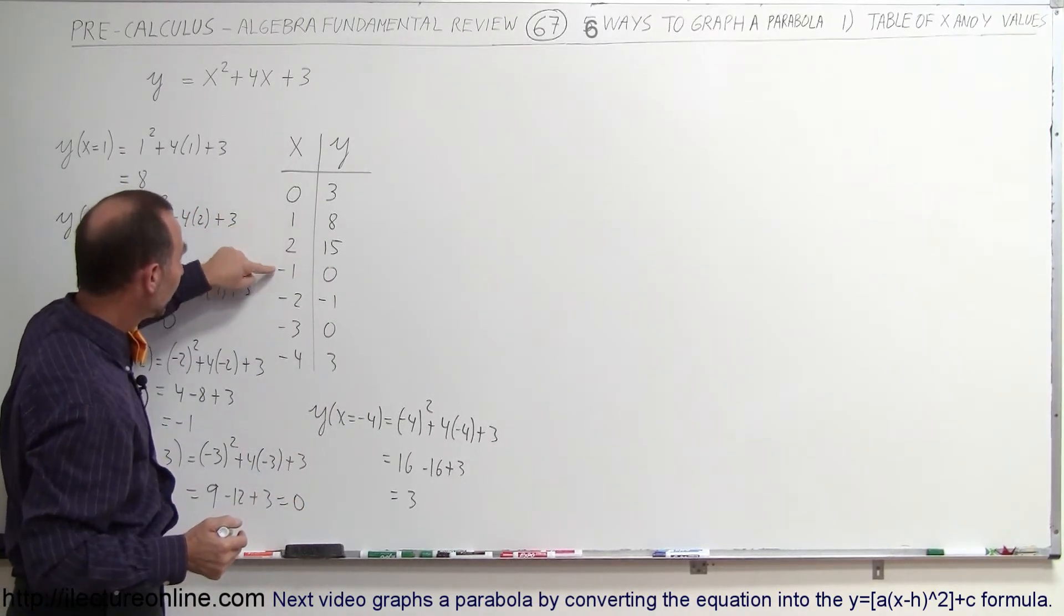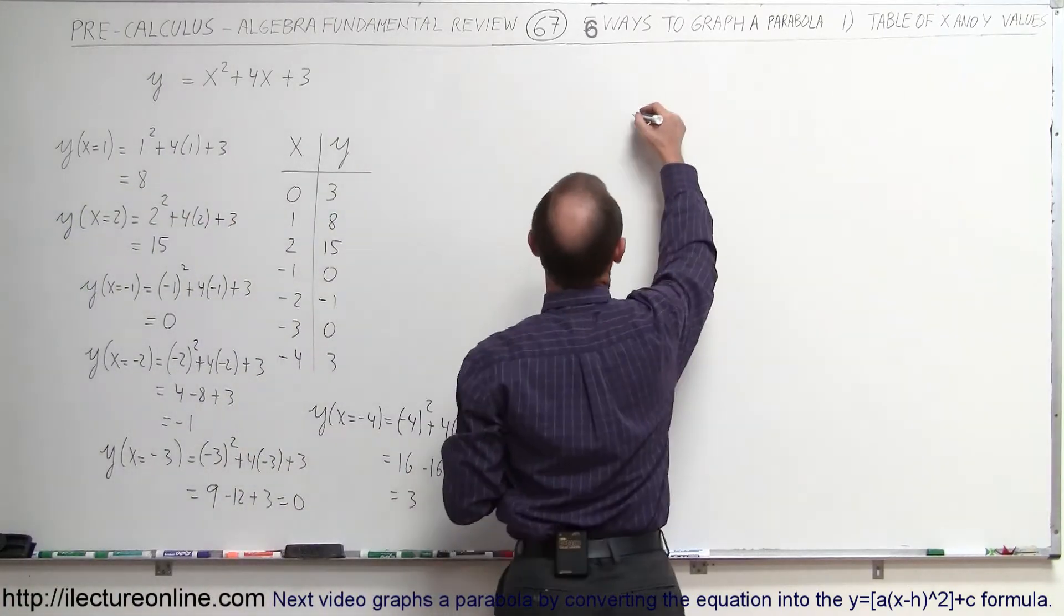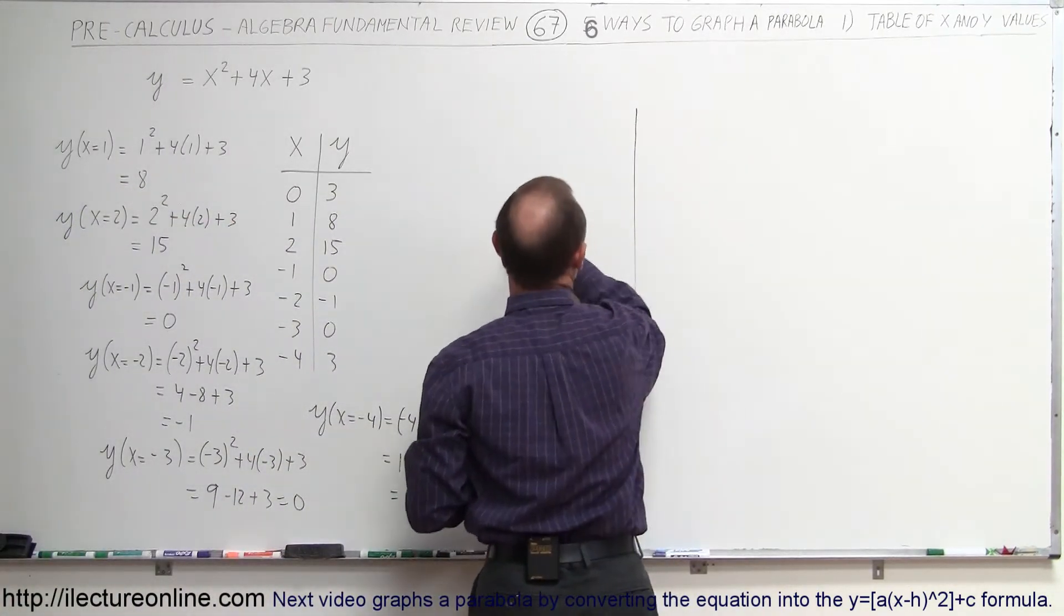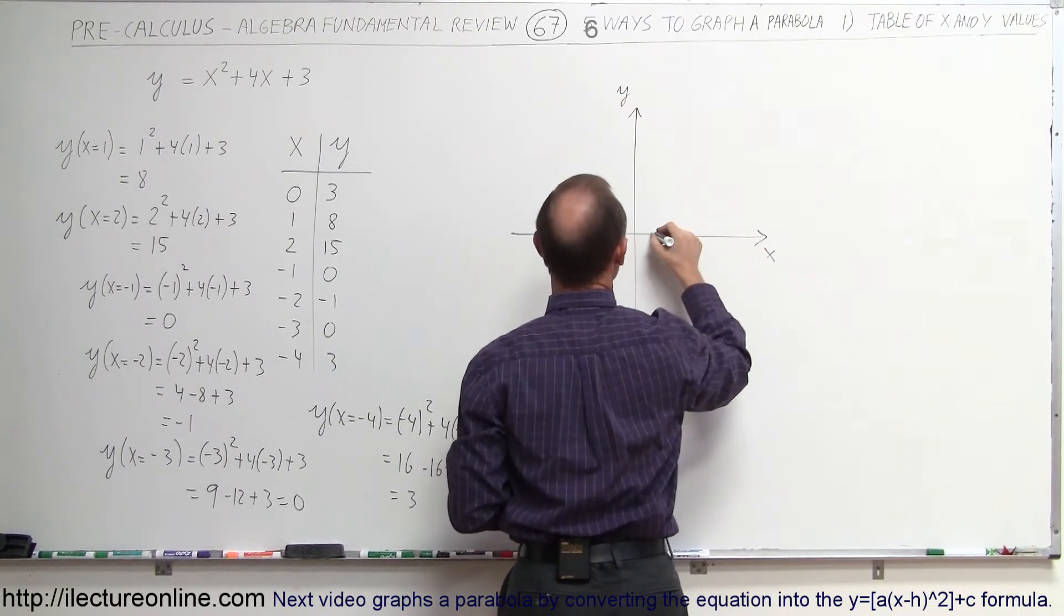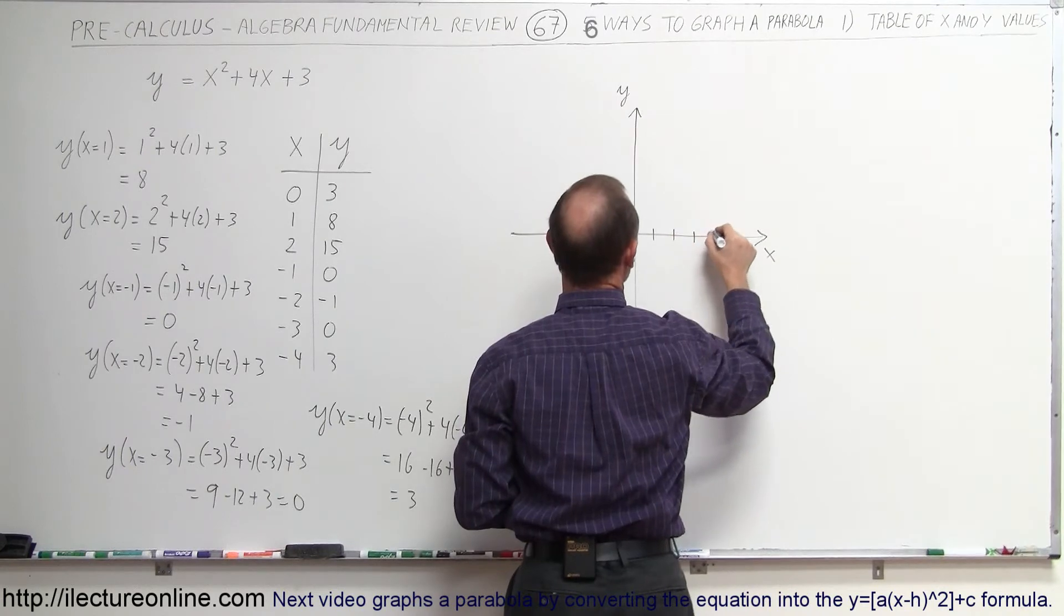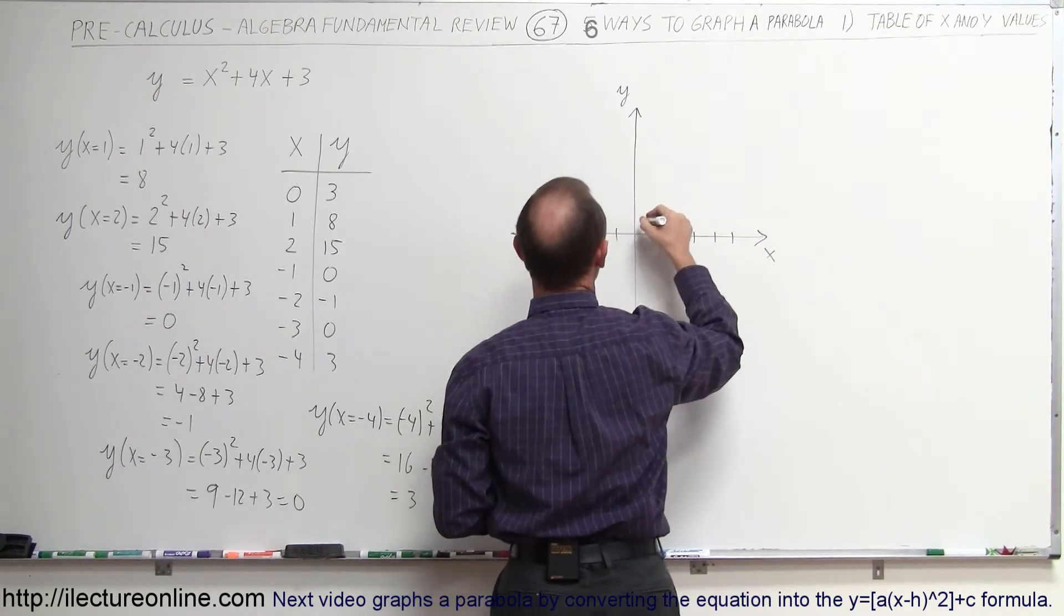So now we have a set of 1, 2, 3, 4, 5, 6, 7 points that we could put on the x, y axis on the Cartesian coordinate system. So here's the y axis. There's our x axis. We can mark up the x axis. 1, 2, 3, 4, 5, negative 1, negative 2, negative 3, negative 4, negative 5.